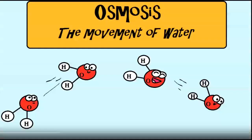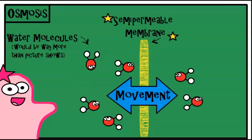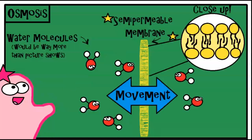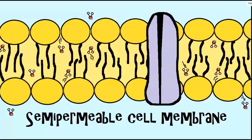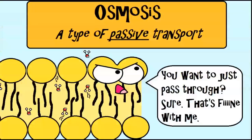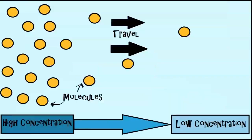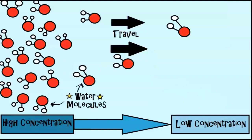Now, first understand that osmosis is the movement of water, and that really is a type of diffusion. Often when you're talking about osmosis, you're talking about the movement of water through a semi-permeable membrane like a cell membrane. A cell membrane has openings small enough for water molecules to pass, but it will not allow larger things like salt molecules to freely pass — at least not without assistance. Osmosis is a type of passive transport, meaning that it doesn't require energy. Similar to diffusion, water molecules travel from areas of high concentration of water to low concentration of water.